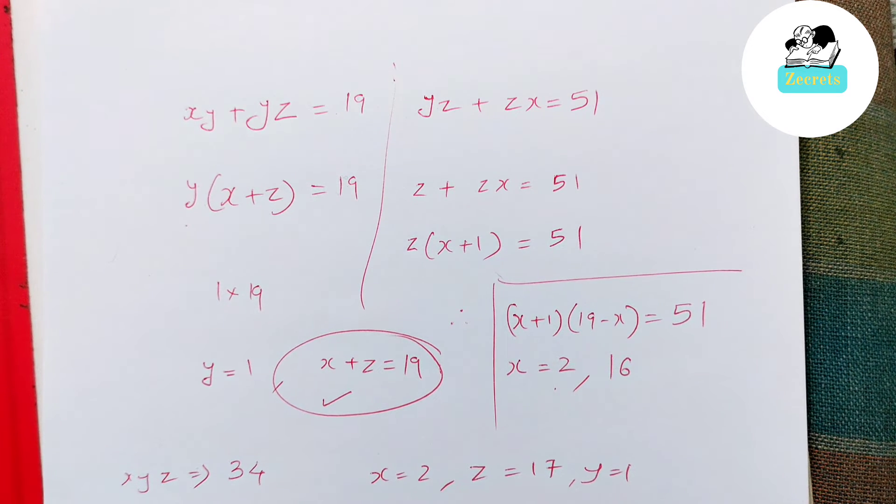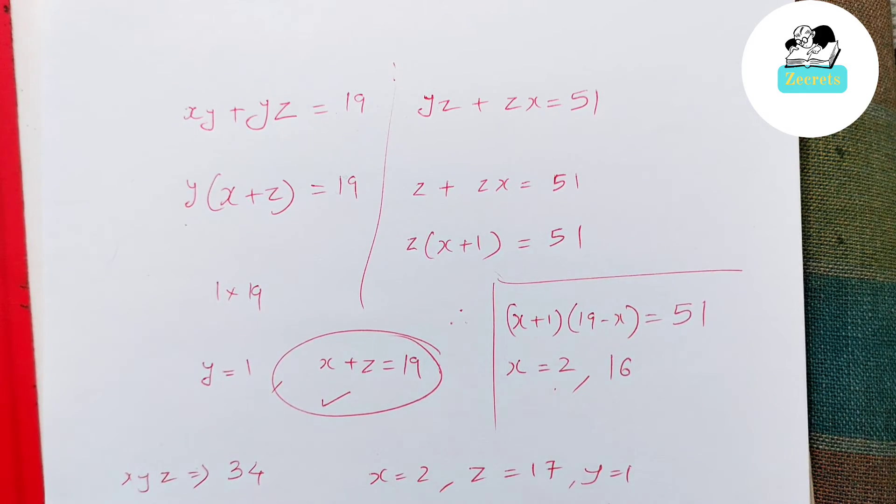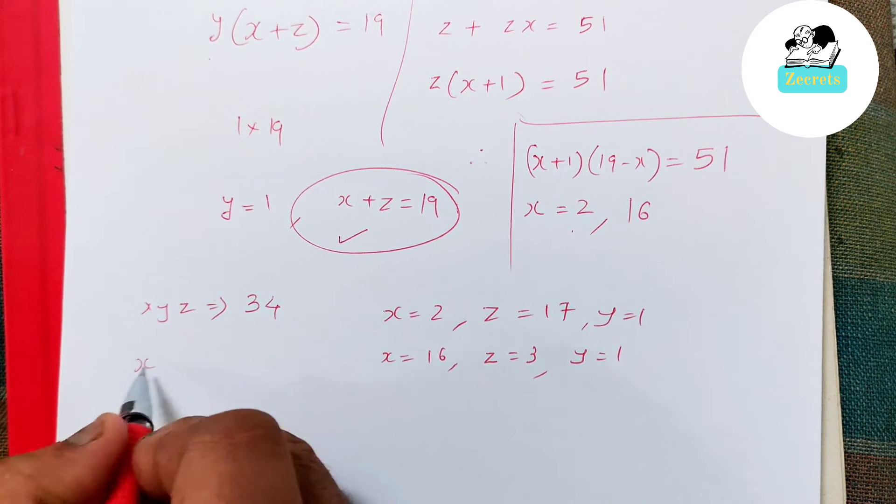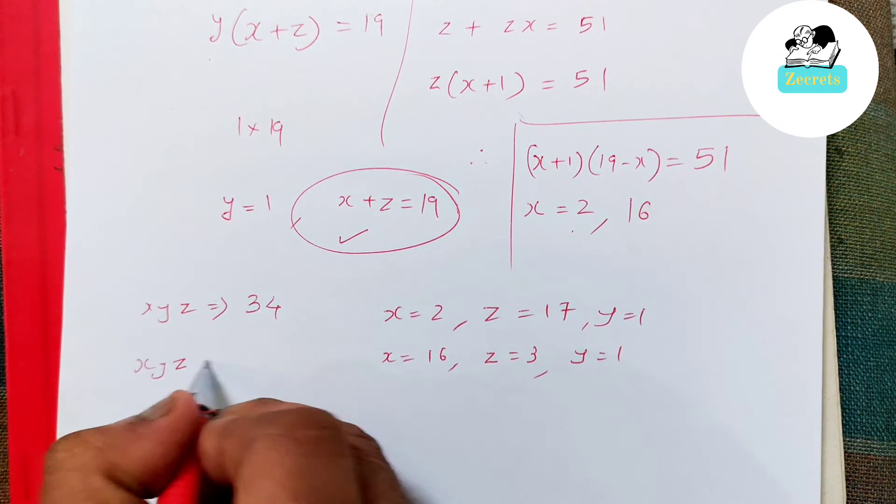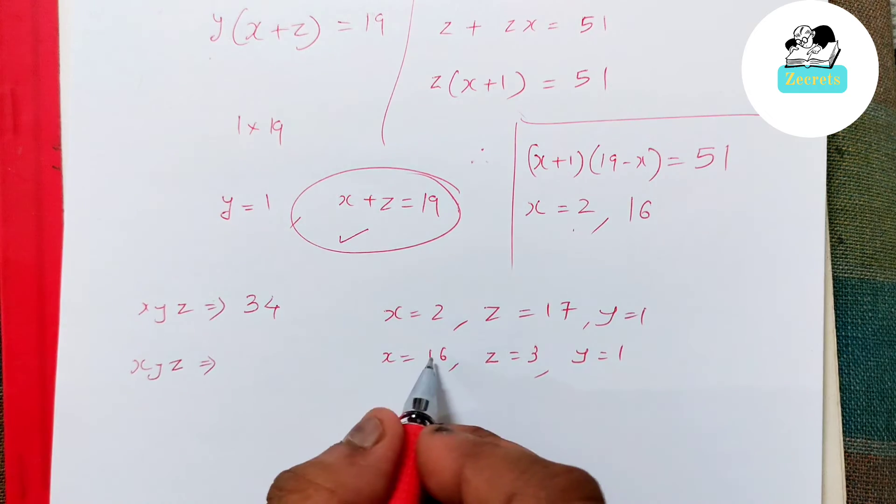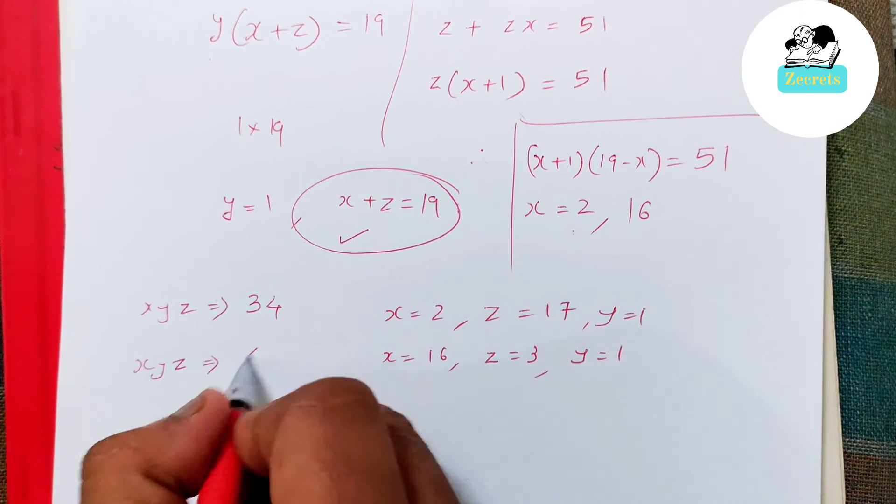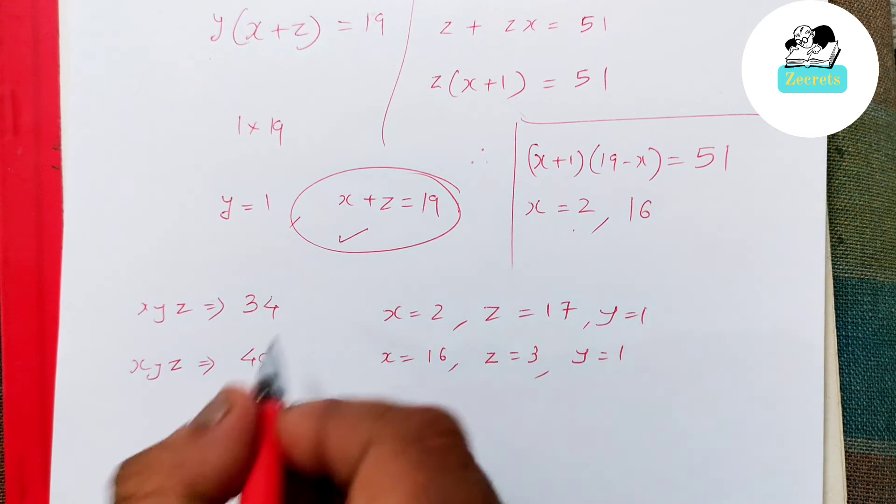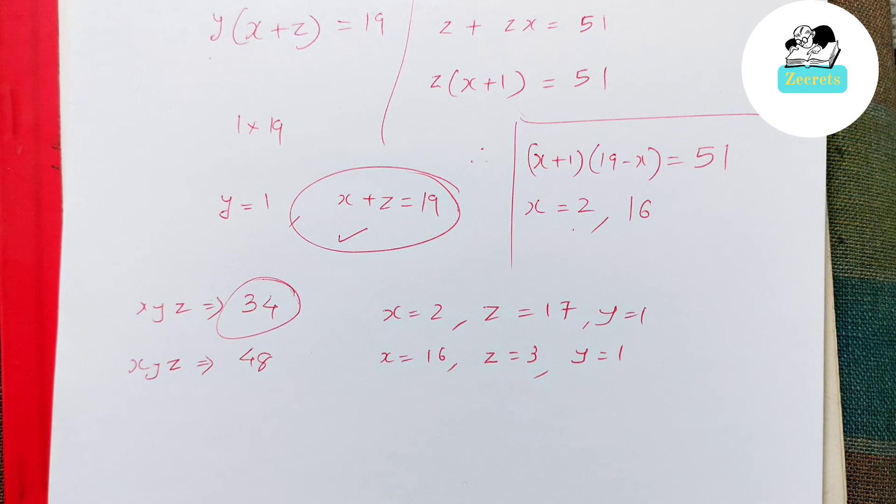Then the other value, which is x equals 16, gives me z equals 3 and y is 1. So xyz becomes 16 times 3 times 1, which is 48. The question was to find out the minimum value of xyz, which is 34, and done.